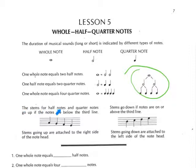Well, the stems for half notes and quarter notes go up if the notes are below the third line. Do you see how the third line is right in the middle here? Those notes are below the third line, and therefore the stems go up, and they go up on the right.